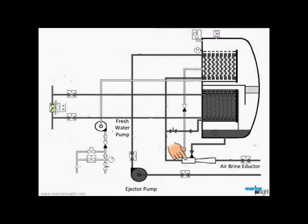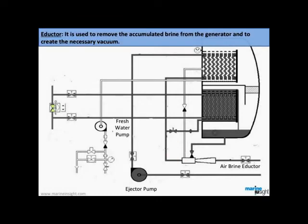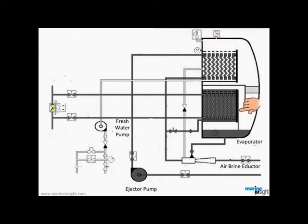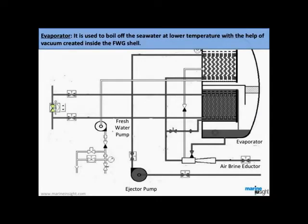Air and brine eductor. It is used to remove the accumulated brine from the generator and to create the necessary vacuum. Evaporator. It is used to boil off the seawater at lower temperature with the help of vacuum created inside the freshwater generator shell.